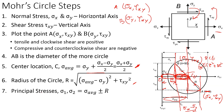The principal stresses — maximum and minimum normal stresses on the Mohr's Circle — can now be calculated: the maximum principal stress is the center plus the radius, and the minimum is the center minus the radius. The maximum shear stress is simply the radius of the Mohr's Circle, because the center lies on the horizontal axis.